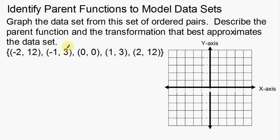So we're going to graph the data set from the set of ordered pairs. We need to describe the parent function and the transformation that best approximate the data set. So not only are we going to identify the parent function itself, we're going to identify how it looks differently from the original parent function.